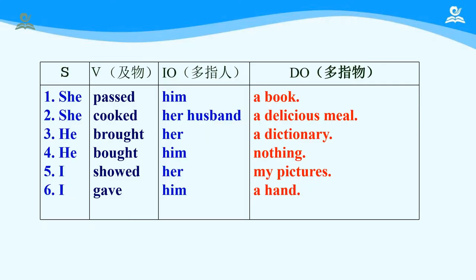Now please read the sentences after me: She passed him a book. She cooked her husband a delicious meal. He brought her a dictionary. He bought him nothing. I showed her my pictures. I gave him a hand.